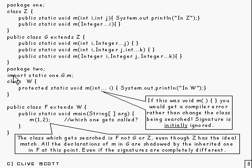Down in this package two we import static M from G. So the question is what methods get imported, and the answer is all of those there plus the two inherited ones, because inherited ones are members of G just as much as the ones declared are. So those three there and those two get imported by that statement.